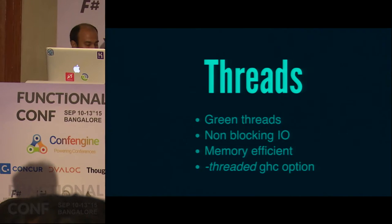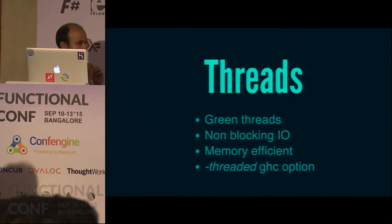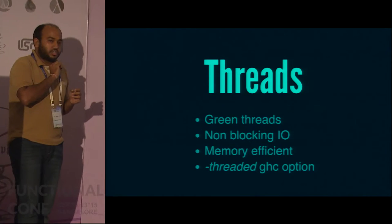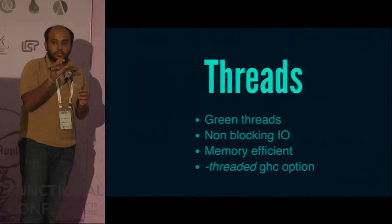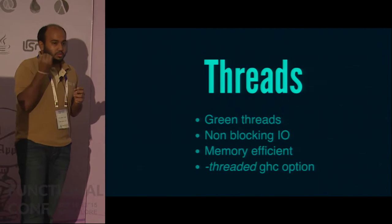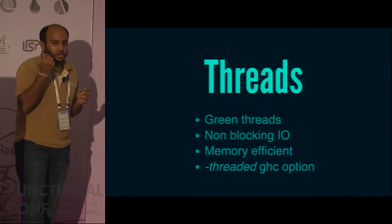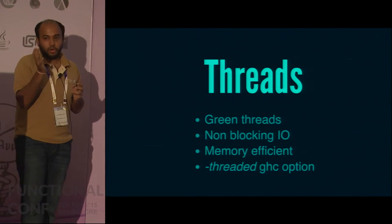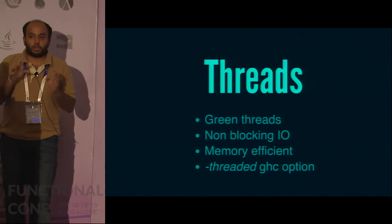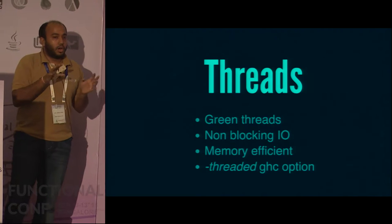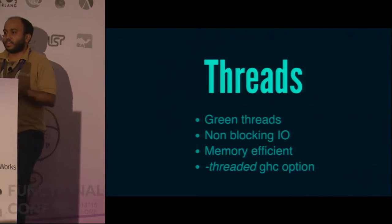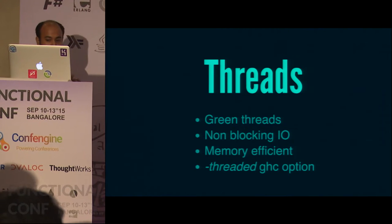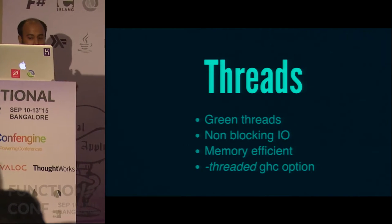These two things combined — non-blocking IO and memory-efficient threads — mean you can potentially launch hundreds of thousands of threads, even possibly millions of threads in a single Haskell process. They are all mapped to a small bunch of OS threads and run fine. That means you can launch threads even for the smallest things — a timer, an HTTP call — you don't have to worry about thread pools.